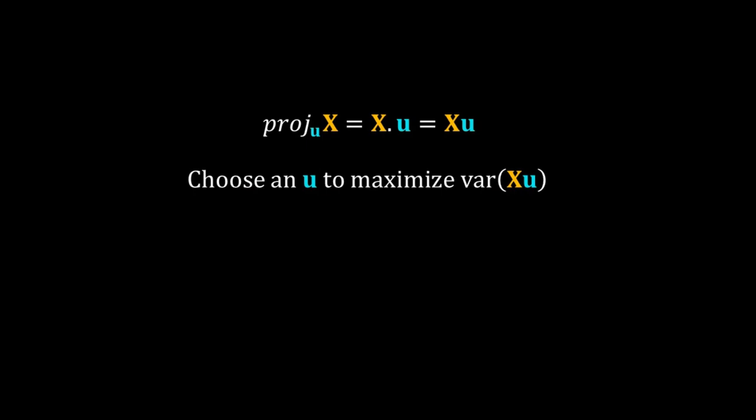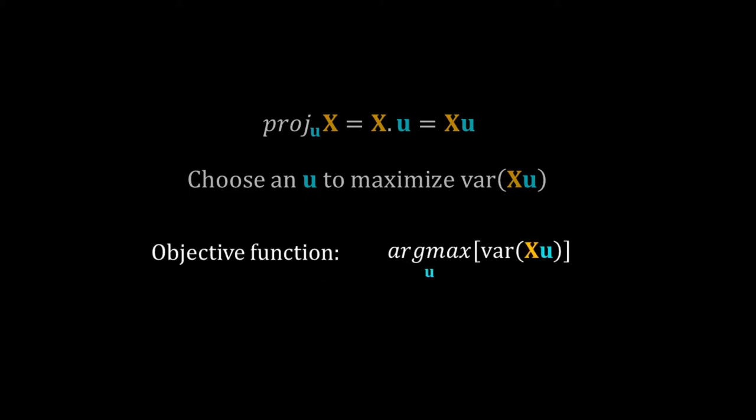Now let me start the topics of the second video. I have to maximize the variance of Xu. In mathematical notation, I can write the problem as argmax u of variance of Xu — that is our objective function. I will use some optimization technique for this, but we cannot take any vector; u must be a unit vector, so that is the constraint for our optimization.